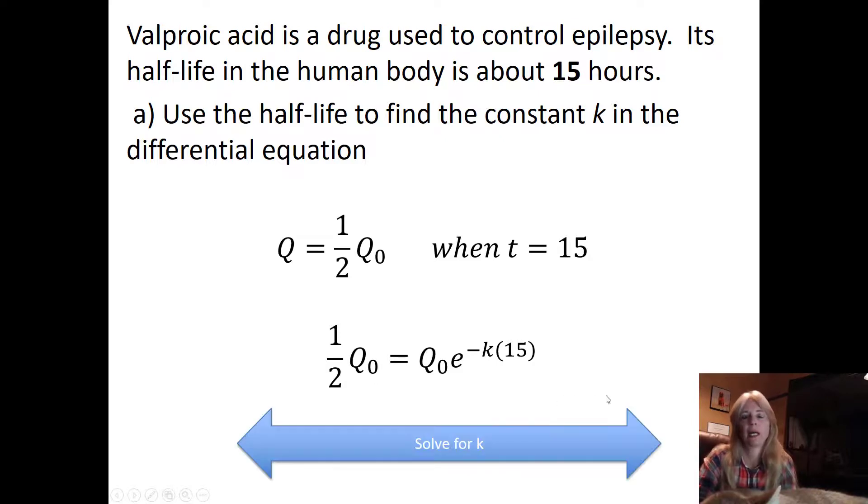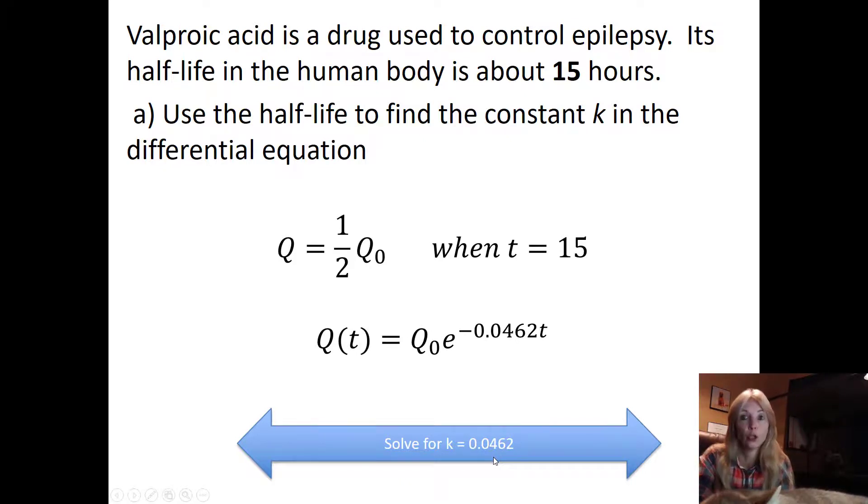I have the same thing that I did a couple of slides back where I can solve for k. Go through all those steps again: divide by Q_0, take ln, and you should get this value for k. You should do this; don't just sit there and say uh-huh because you're gonna see this on the test. Be sure you go through all the steps.